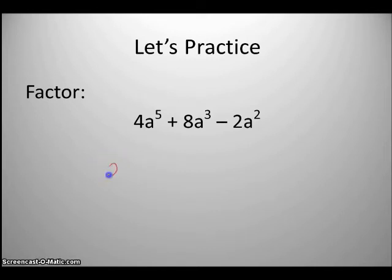So I'm going to factor out a 2. Now I'm going to look at my variables. I have a to the 5th, a cubed, and a squared. Now what's the greatest number of variables that I have in common in each term? That's right. a squared is the largest amount that I have in common with all three of my terms.